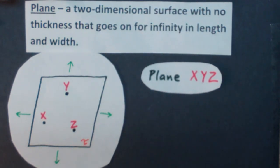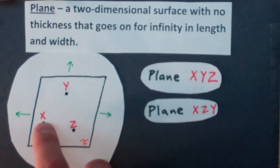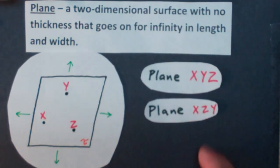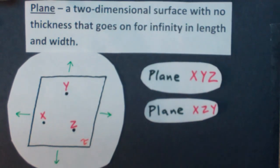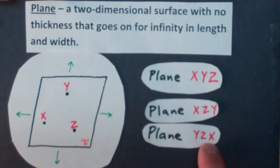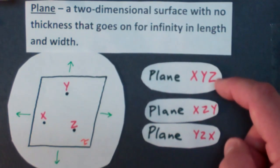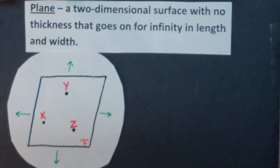I have points XYZ, so I can name this plane XYZ. But just like a line, it doesn't matter the order those letters are in. So I have plane XYZ, or I could have plane XZY, it doesn't matter the order. I could also put plane YZX. So again, it doesn't matter the order. You just need to have three letters to name a plane.